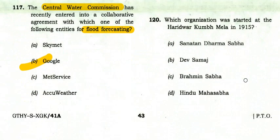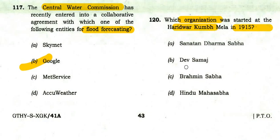Which organization was started at the Haridwar Kumbh Mela in 1915? The right option is Hindu Mahasabha — Hindu Mahasabha was started at the Haridwar Kumbh Mela in 1915.